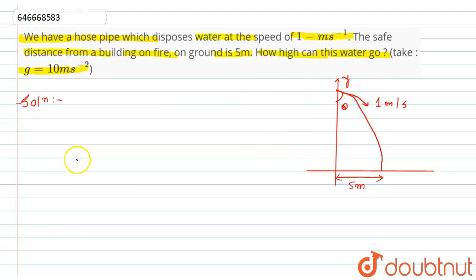the equation of trajectory: y = x tan θ - gx²/(2u² cos² θ). According to the question, the value of